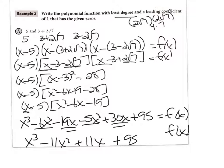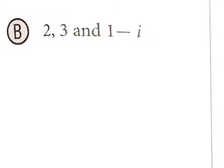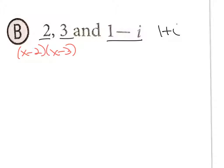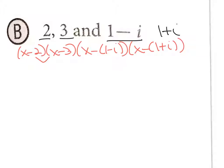It's not extremely difficult, just long and tedious. One more example with an i: given zeros 2, 3, and 1 − i. Since 1 − i is a zero, 1 + i must also be a zero. Setting up the factors: (x − 2)(x − 3)(x − (1 − i))(x − (1 + i)).